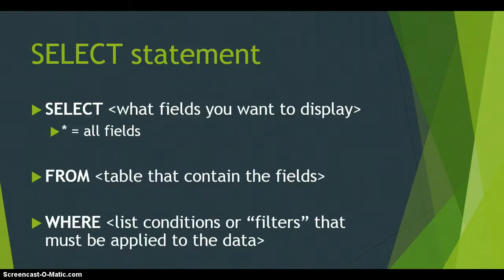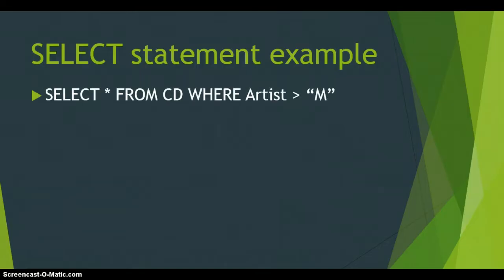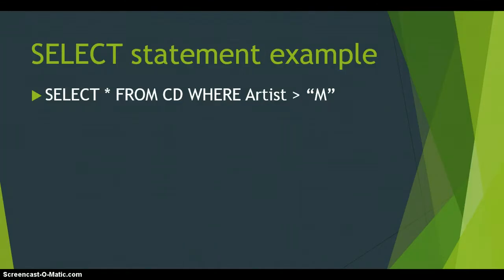Let's look at our first query: we select all the information from the CD table but only where the artist is greater than M. In the previous video we looked at where the genre equaled rock or didn't equal rock, but what happens if we use greater than or less than symbols with text? Please also note that because we're dealing with text, we have to put it in double quotes.